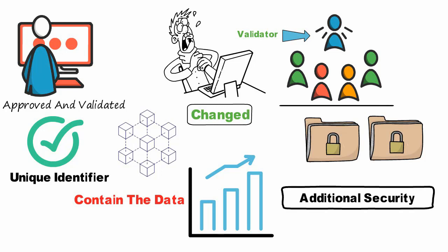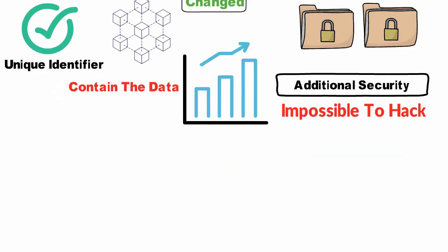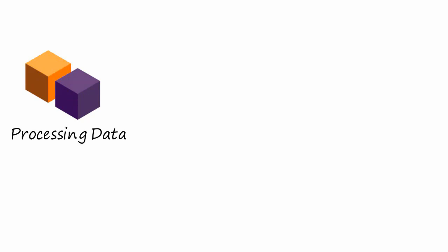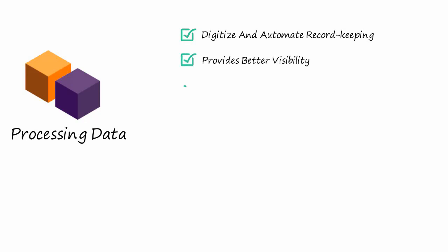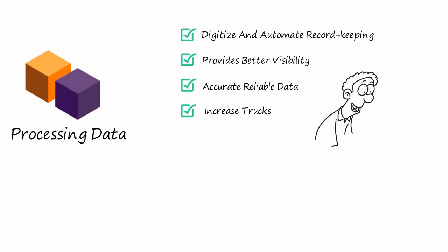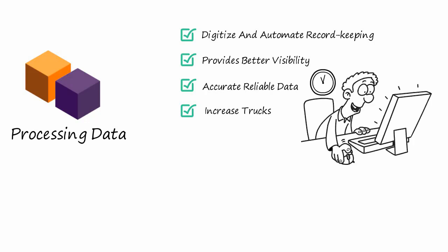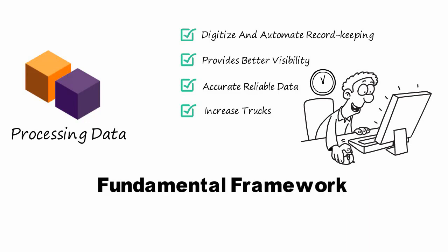This makes it nearly impossible to hack, change, or corrupt. Blockchain technology can also be used in processing data across a network. It allows industries to digitize and automate record keeping, providing better visibility, more accurate and reliable data, and increased trust amongst participants in the network.